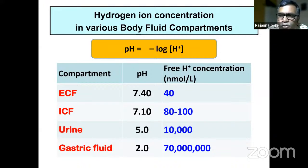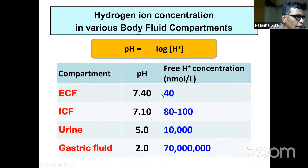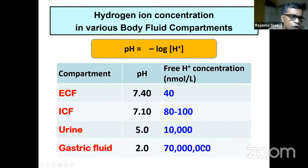Hydrogen ion concentration — pH is nothing but the negative logarithm of hydrogen in moles per liter. In the extracellular fluid, pH is 7.40, and free hydrogen ion concentration is 40 nanomoles per liter. That is what we measure when we do an ABG. Whereas in the intracellular fluid, pH is 7.10, corresponding to a hydrogen concentration of 80 to 100. In urine, pH can be as low as 5, corresponding to a hydrogen ion concentration of 10,000.